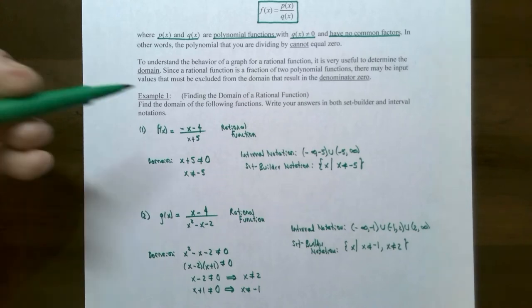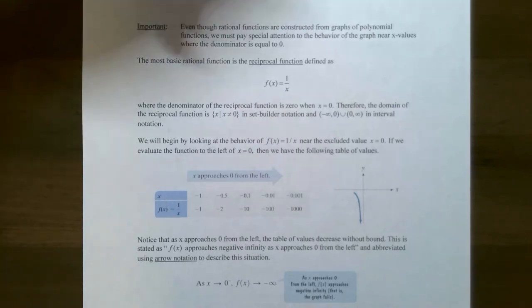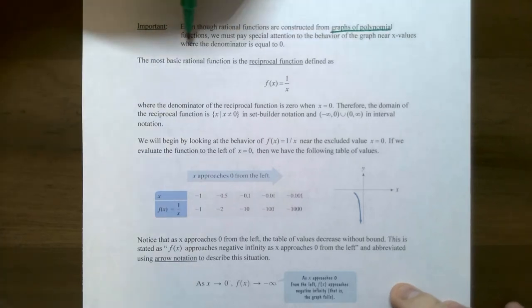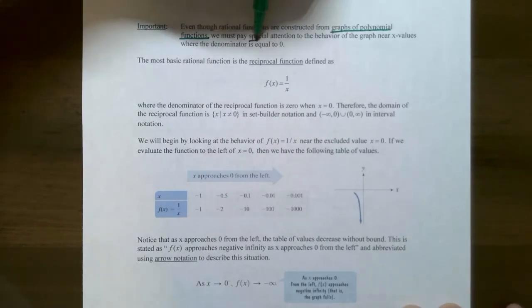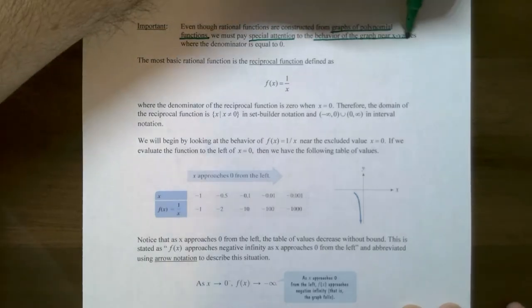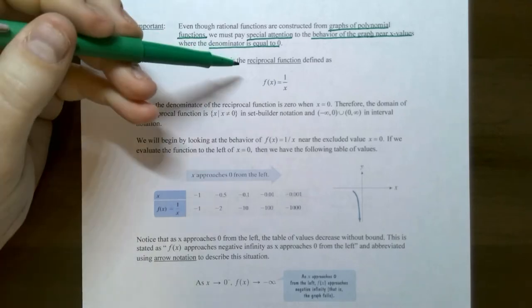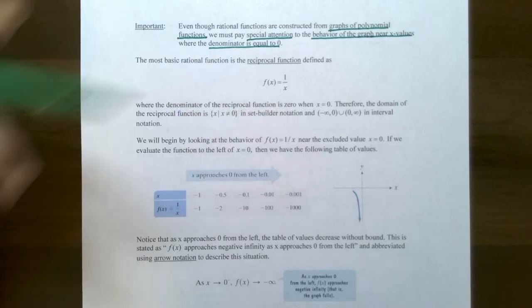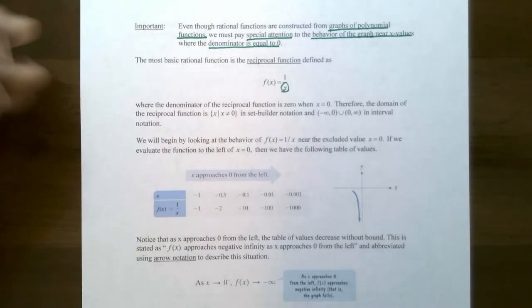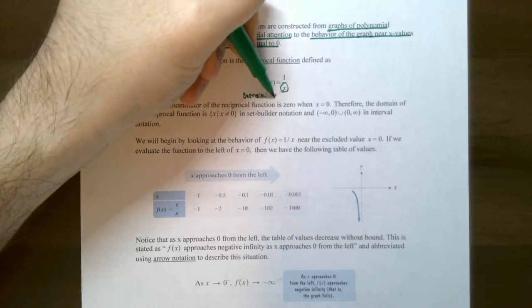Now we're going to talk about how to graph a rational function and some of its characteristics. Even though rational functions are constructed from polynomials, we have to be very careful about what x values cause division by zero, and pay special attention to the behavior of the graph near those values. We'll start with a very basic rational function called the reciprocal function: f(x) = 1/x. Whatever value of x you substitute in, the y value will be the reciprocal of x. Since x cannot equal 0, the domain is all real numbers except x = 0.